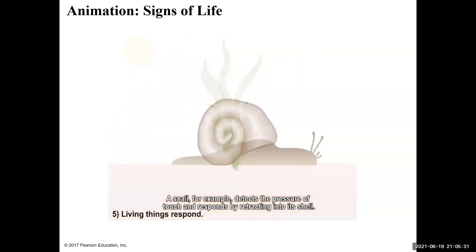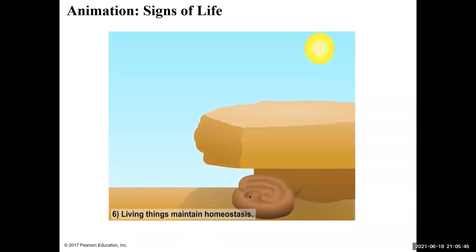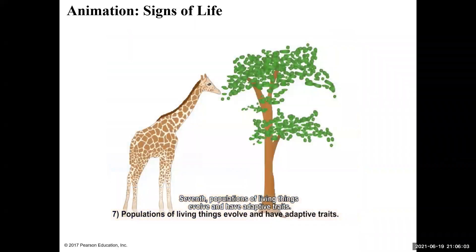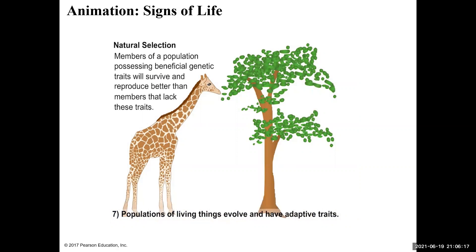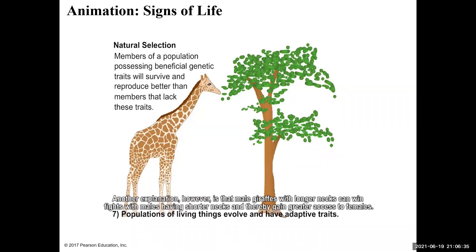Living things respond — a snail, for example, detects the pressure of touch and responds by retracting into its shell. Living things maintain homeostasis, the relatively constant and self-correcting internal environment of a living organism. A snake remains cool by finding shade — a behavioral means of maintaining homeostasis — while humans sweat to remain cool as a physiological means. Finally, populations of living things evolve and have adaptive traits. In natural selection, members with beneficial genetic traits survive and reproduce better. The giraffe's long neck, for instance, is an adaptive trait for reaching leaves or winning fights for access to females.